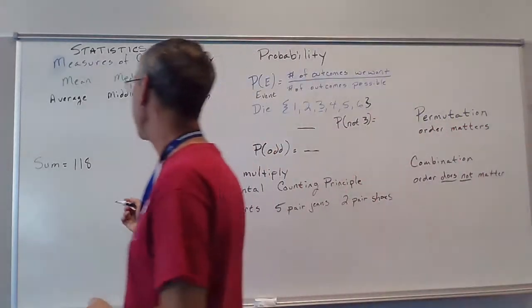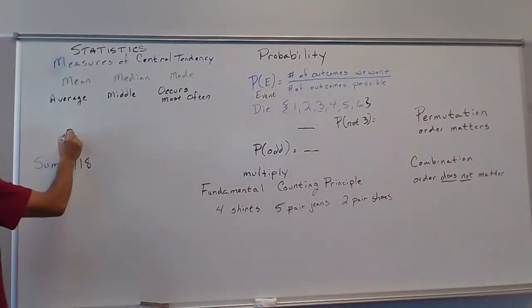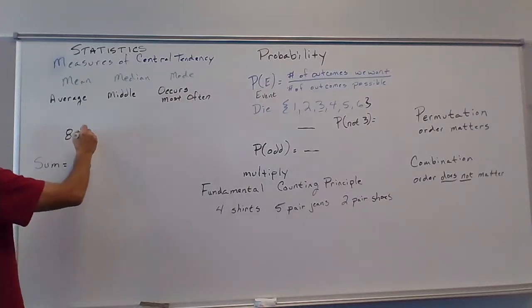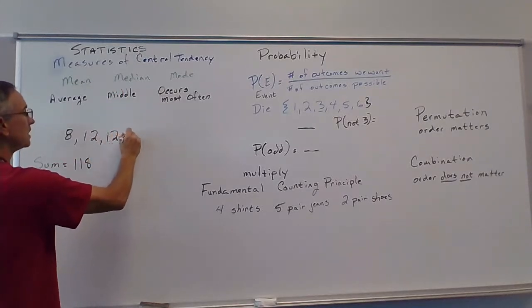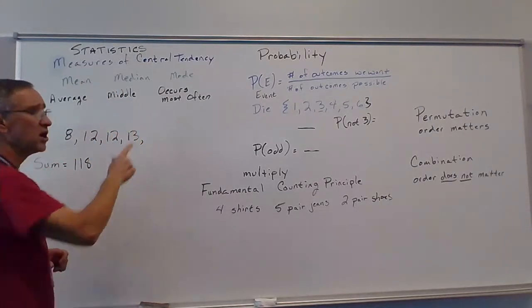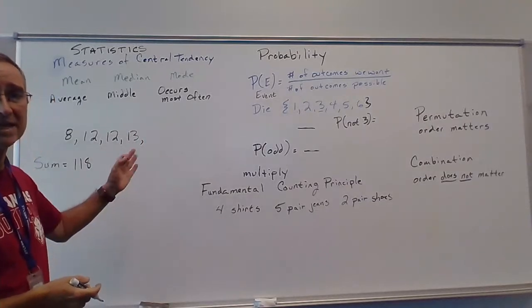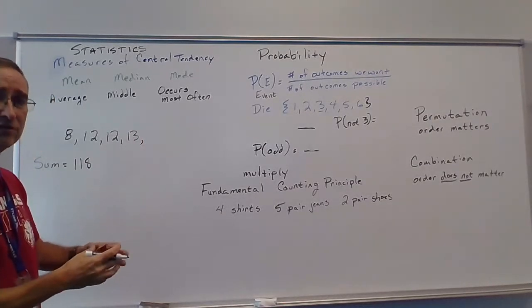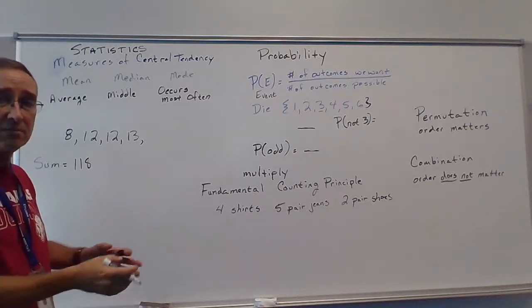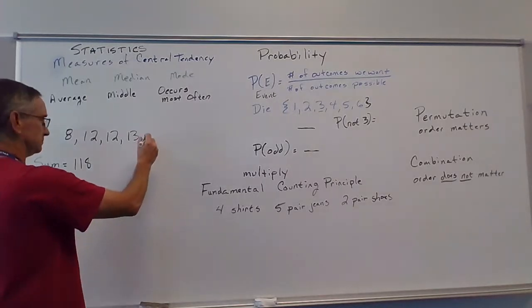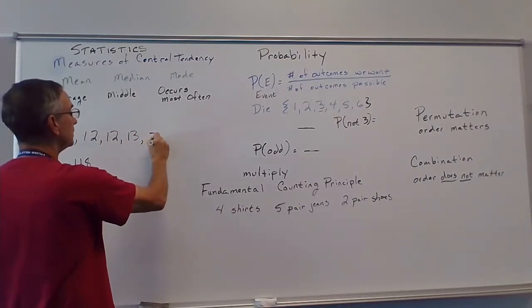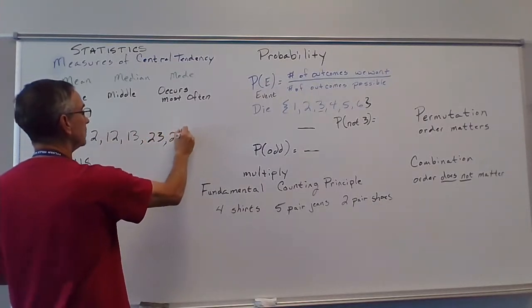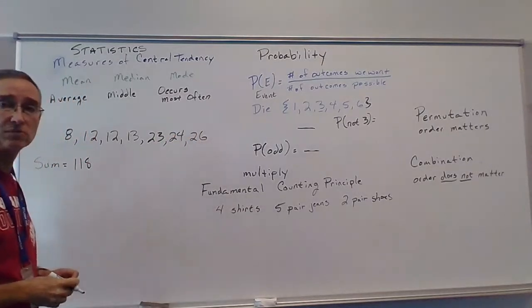We know that mean means the average of a set of numbers, which means you add them all together and divide by how many there are. We know that median is the middle. We know that mode is the number that occurs most often. So mean is the average. Add them together, divide by how many numbers we have. Median means the middle of our data set. And mode is the number that occurs most often.